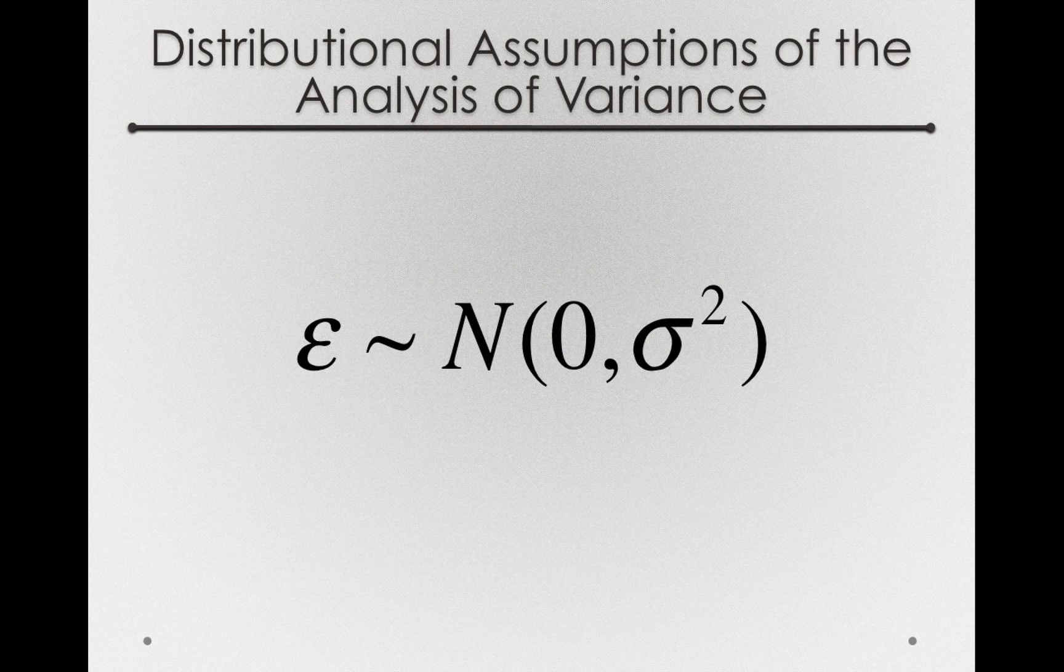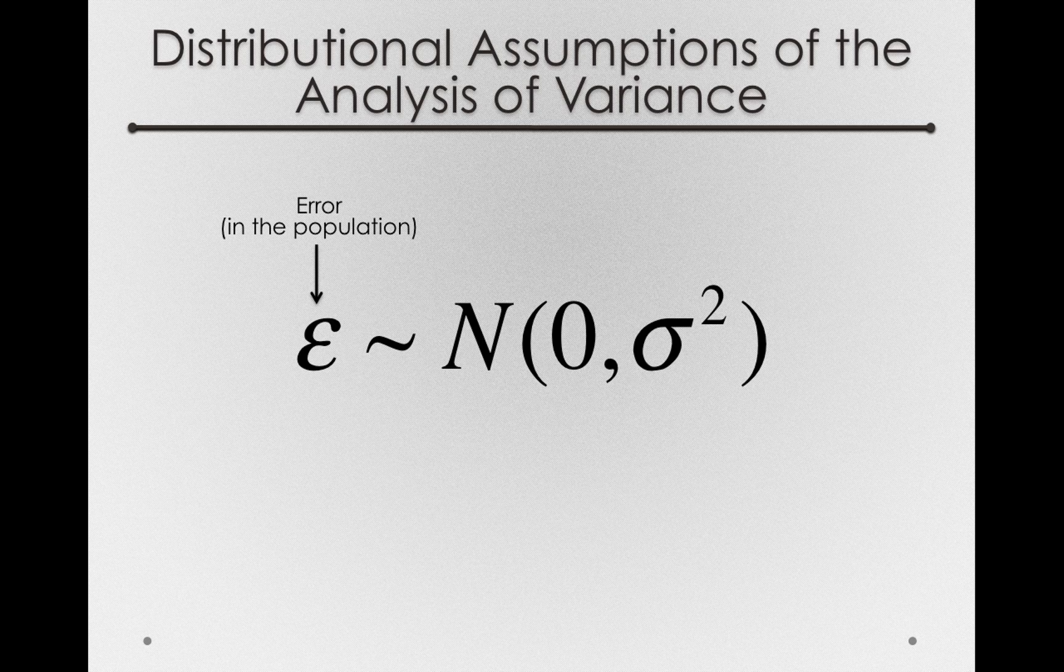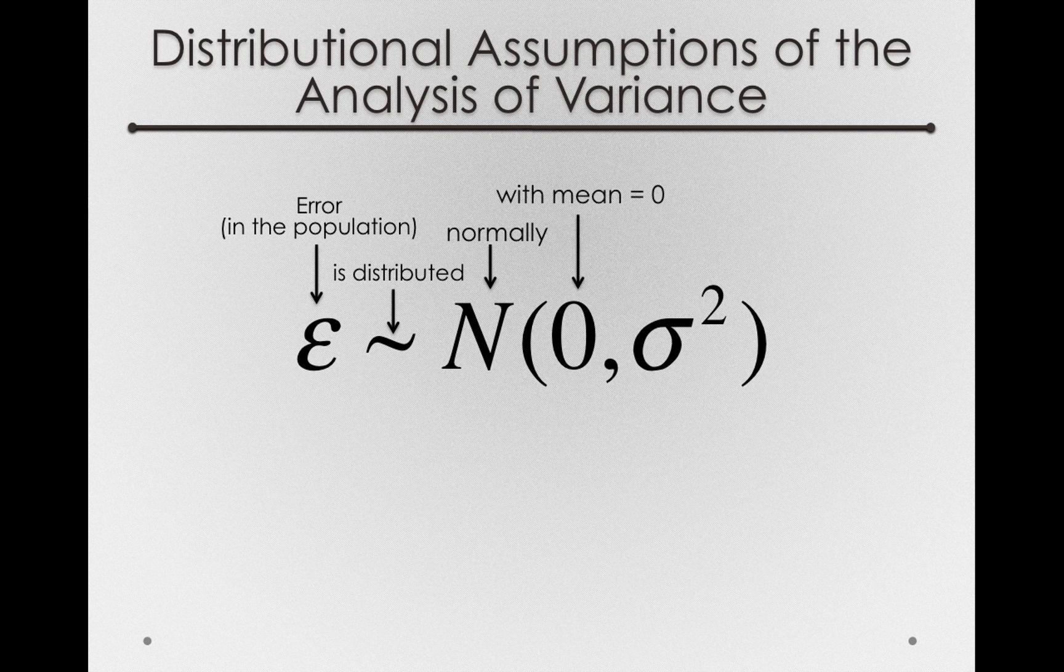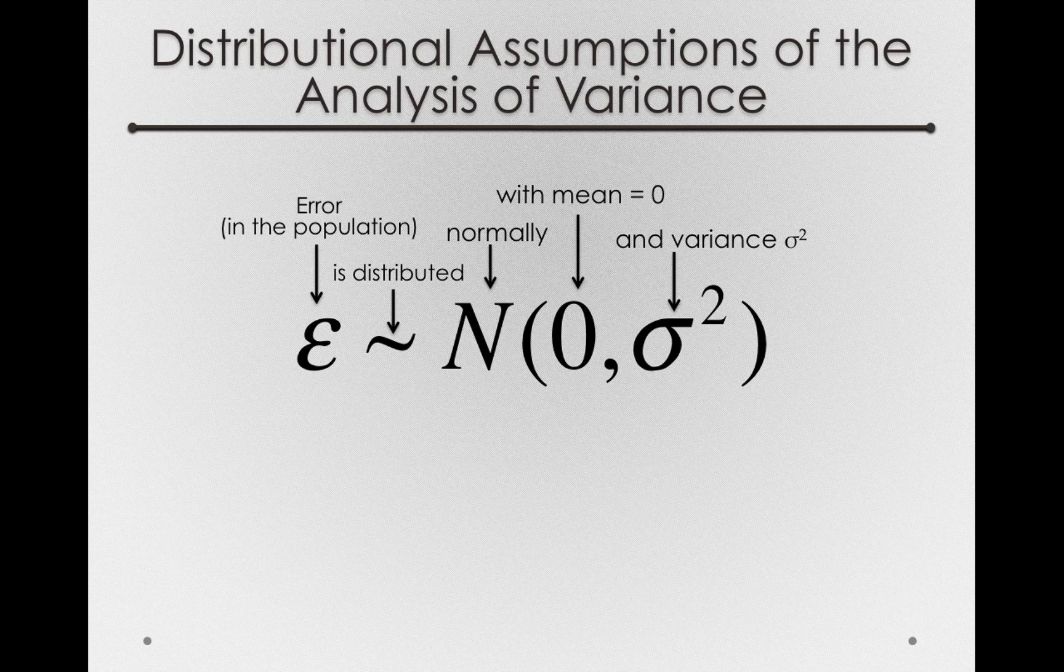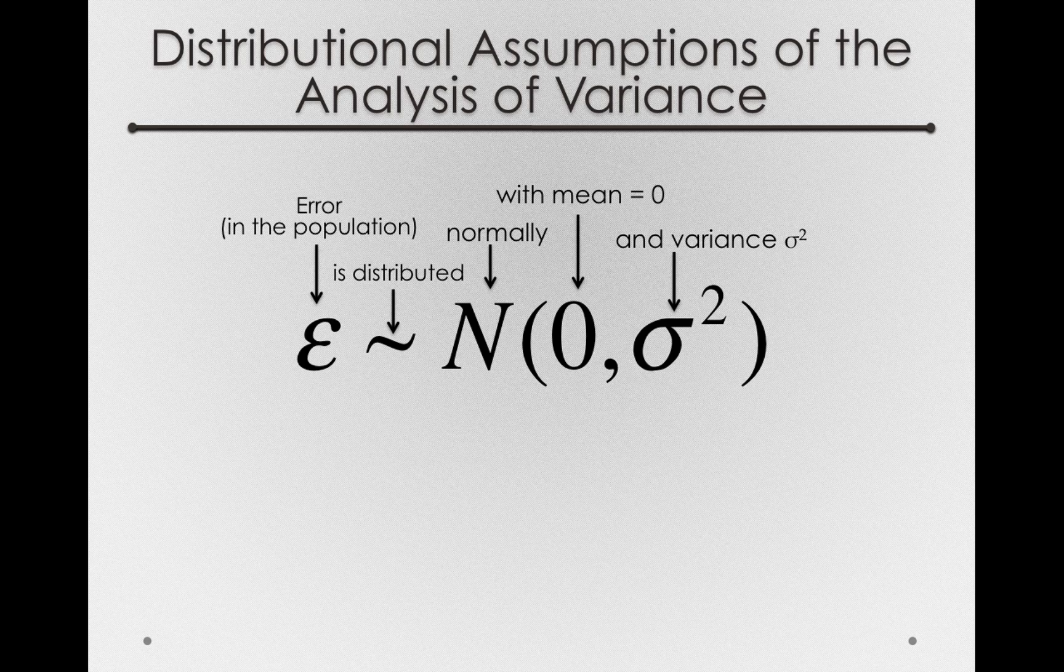There's a basic distributional assumption that pervades the entire analysis of variance, and that reads as epsilon, or error in the population, is distributed normally with a mean of zero and a variance that's equal across all our different treatment groups. We simply write this variance as sigma squared. Notice it has no subscripts. That is, we're saying in every combination of our different groups, the variance in the population is the same.